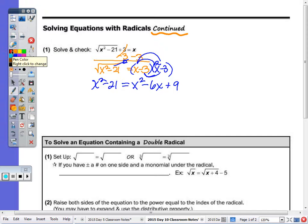When you have the same term on both sides of the equation, you can cross them all. So now I have negative 21 equals negative six x plus nine. It went from quadratic to linear. Subtract the nine, divide by negative six.